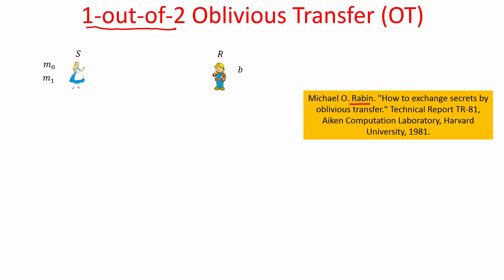In the problem statement we have a sender S and a receiver R. The sender has a pair of private inputs M0 and M1 — they could be as small as 2 bits or arbitrarily long but finite strings. The receiver has a private input which is a selection bit, either 0 or 1. This OT protocol allows the sender and receiver to interact, and at the end only the receiver receives an output — the sender has no output. The receiver gets the message corresponding to its selection bit.